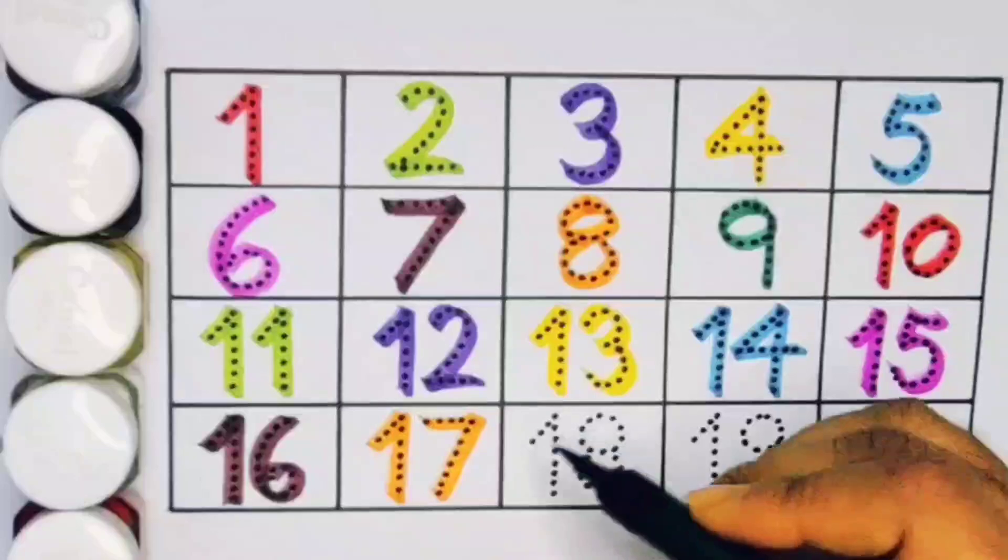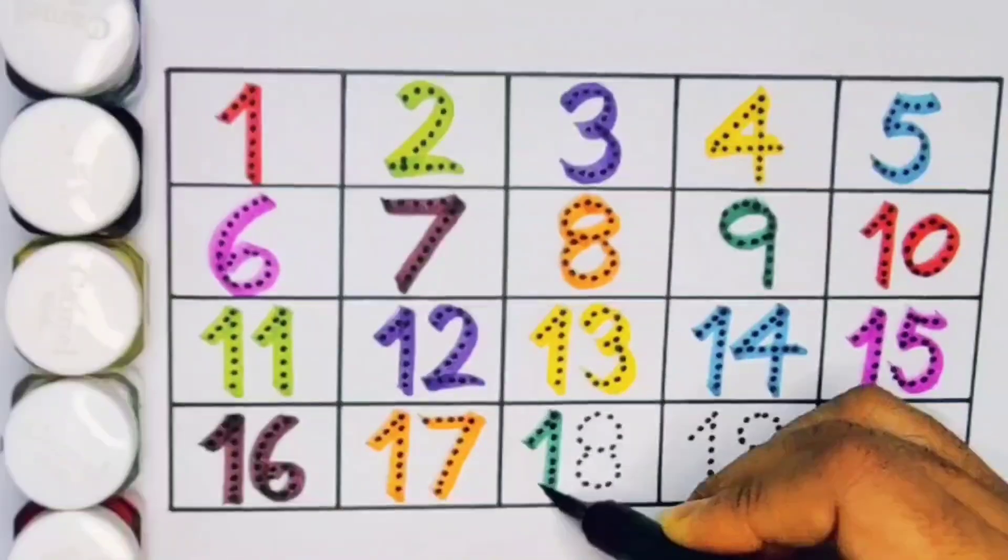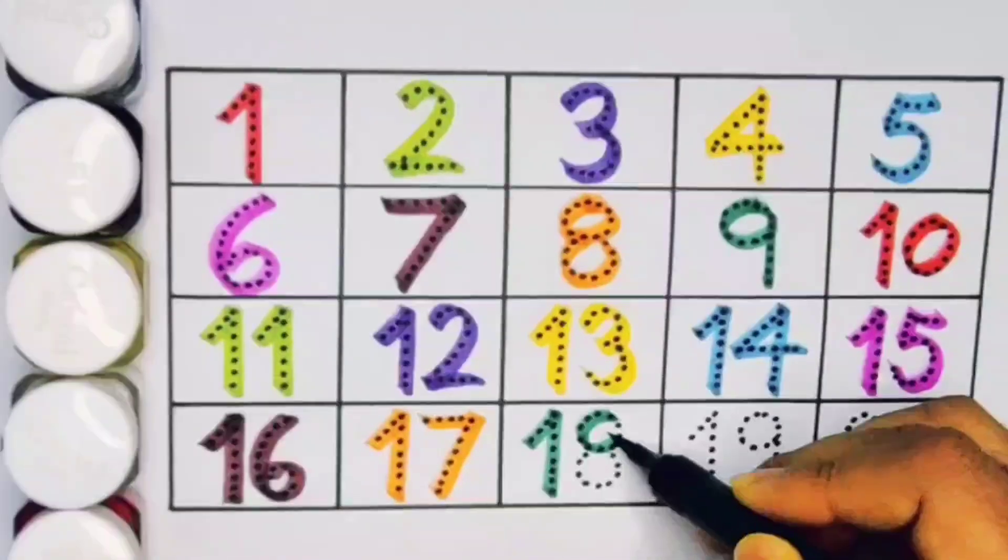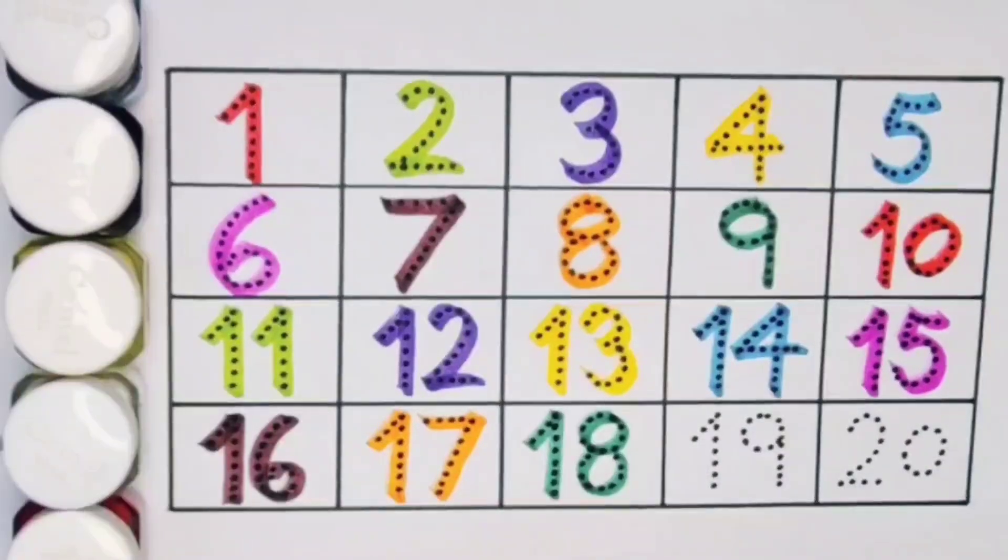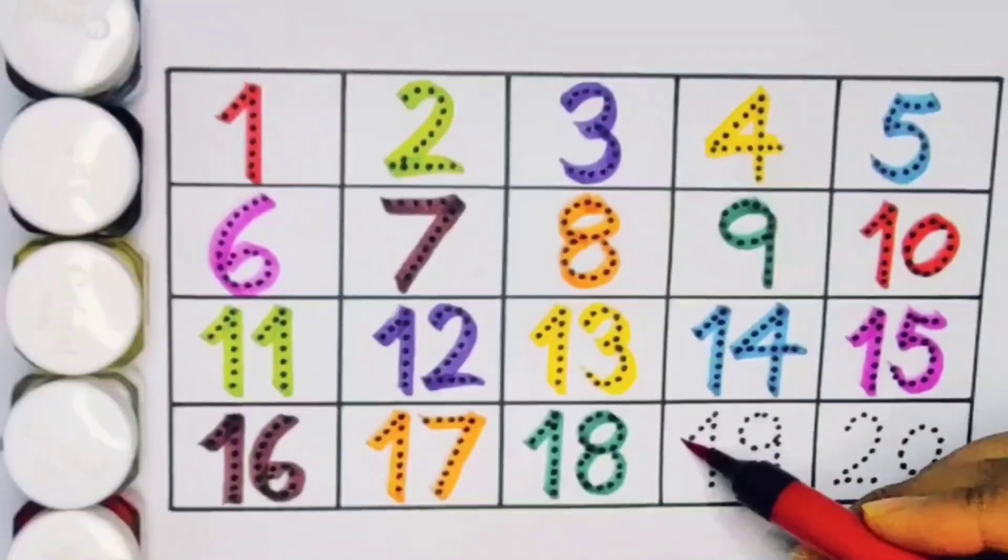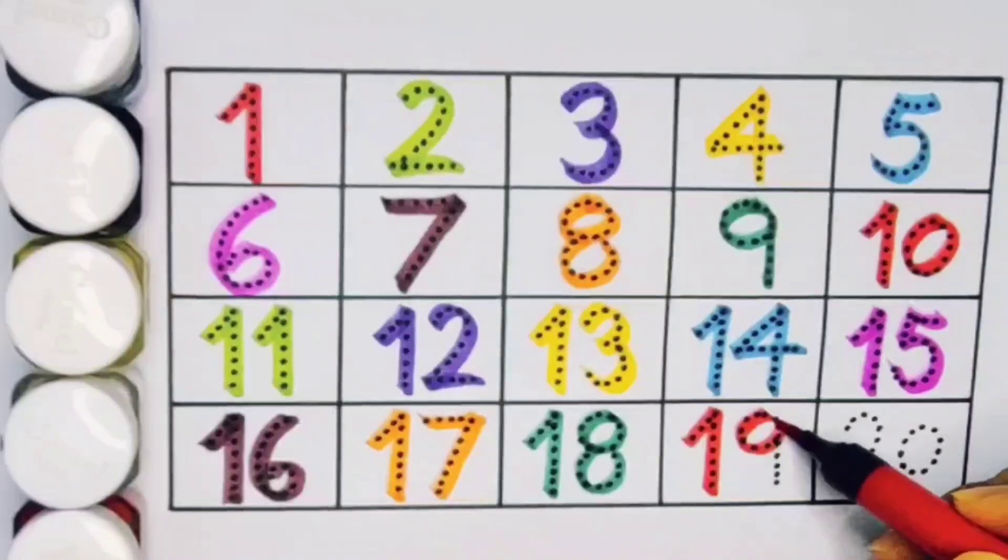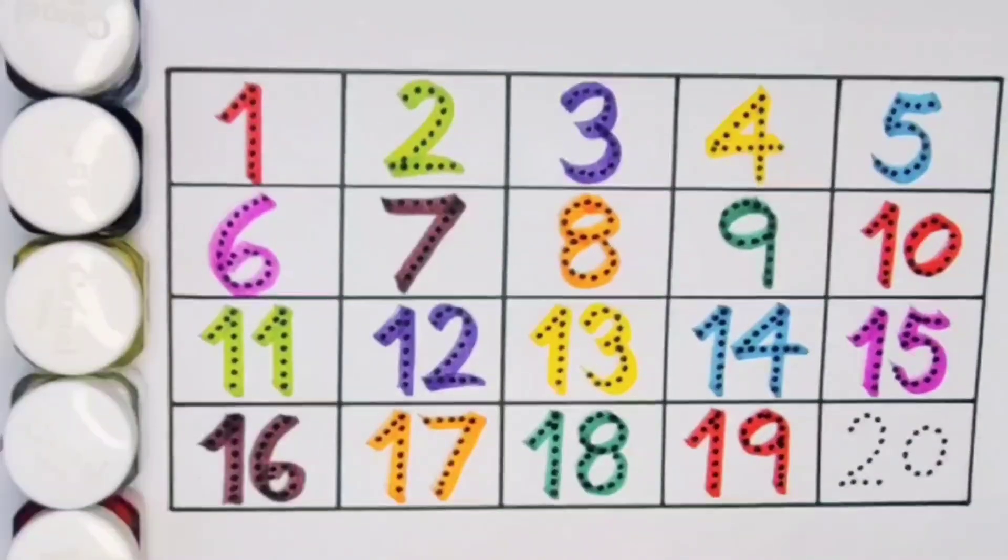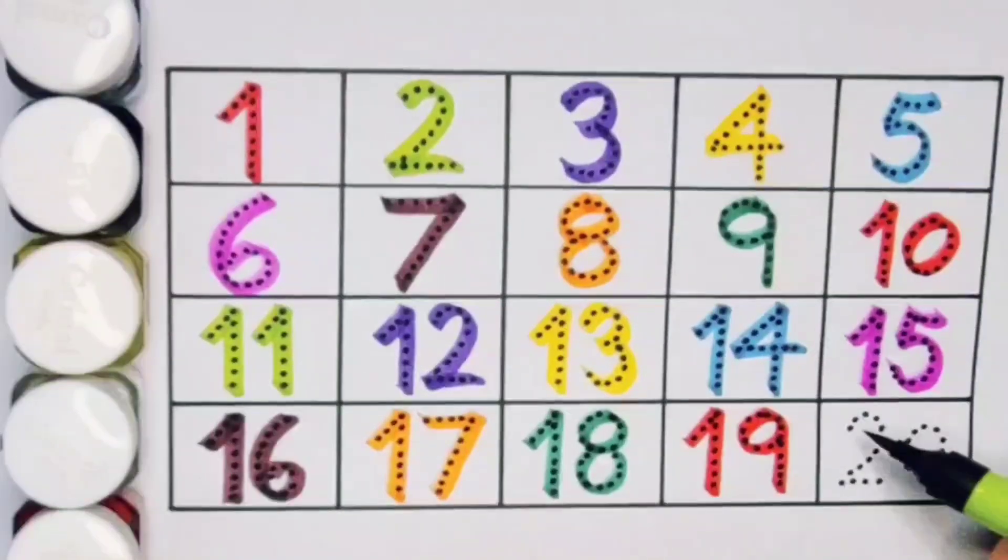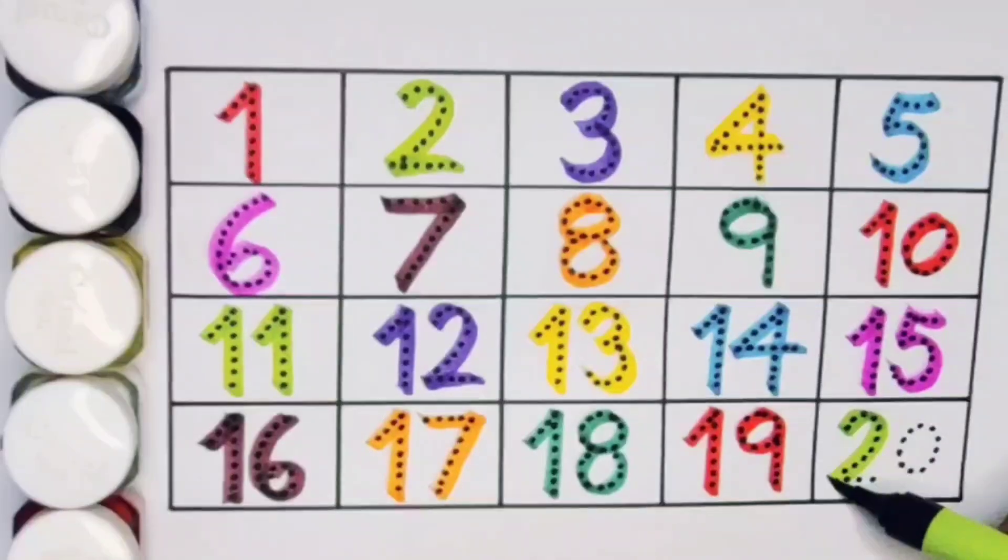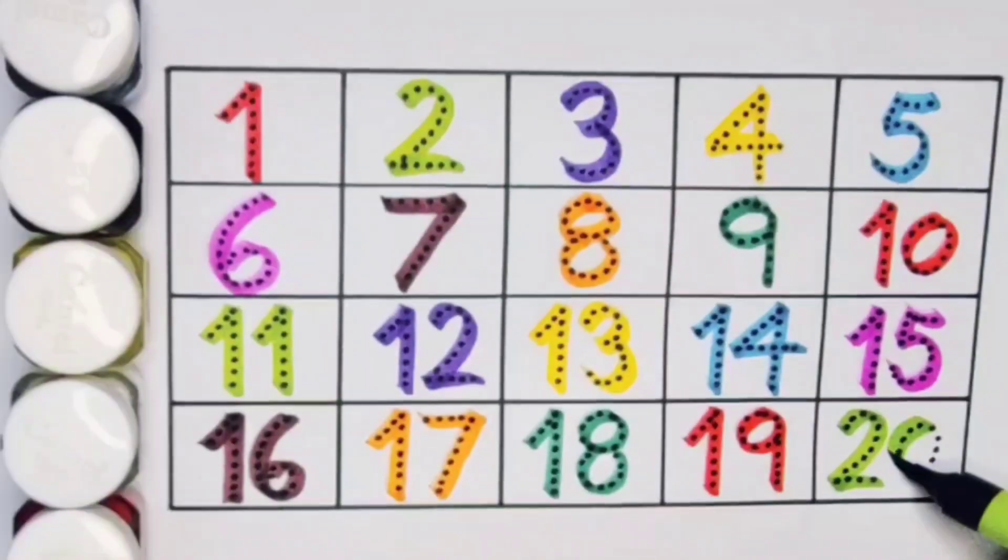Next kids 18, 1, 8, 18. Number 18. Next kids 19, 1, 9, 19. Number 19. Next kids 20, 2, 0, 20. Number 20.